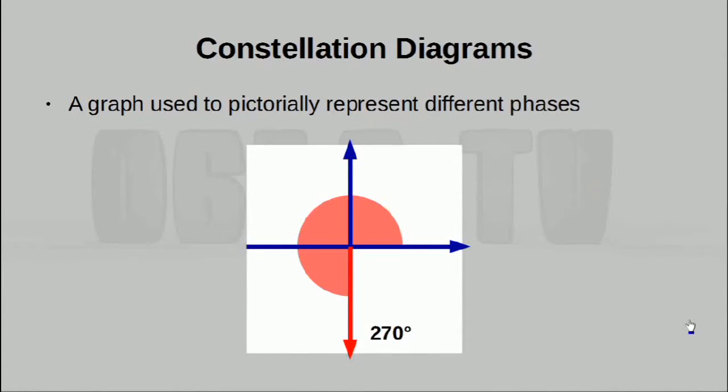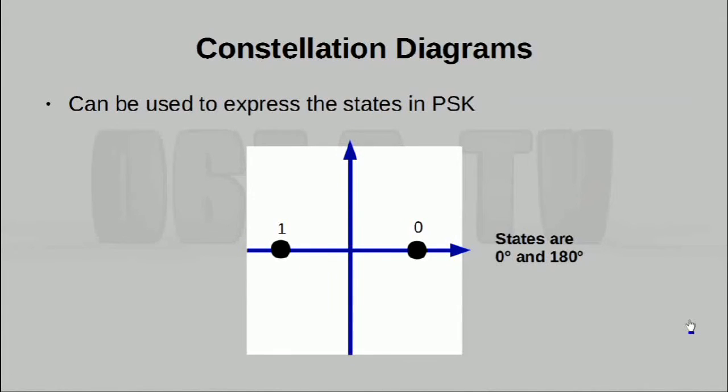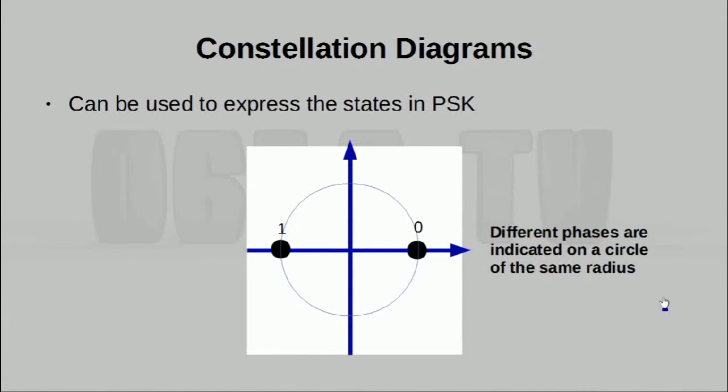So, the reason why we do this is to actually use this graph to represent the different phases. Now, in this case, this is the simplest form of PSK. And the two states are, of course, 0 degrees, which is right here, and 180 degrees, which is here. So when we draw it out on this graph like this, we can easily see the distinct states. Of course, for the sake of consistency, these two points are actually on the same circle. Now, don't worry too much about that at this present moment, we will actually see the significance of this later on.